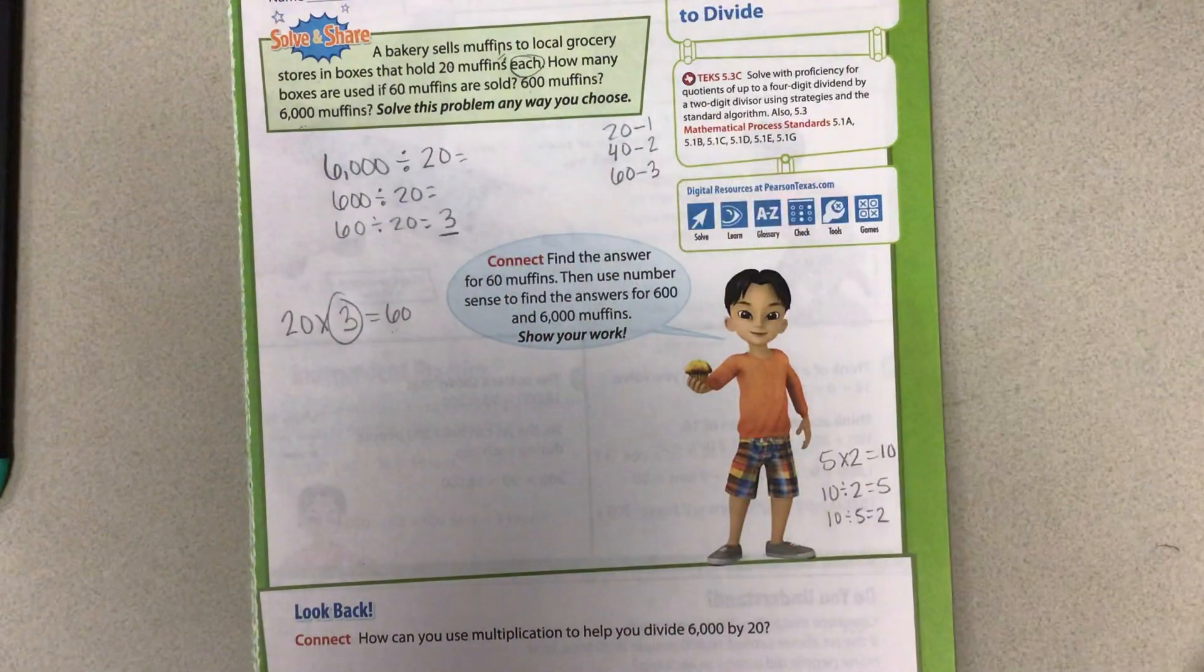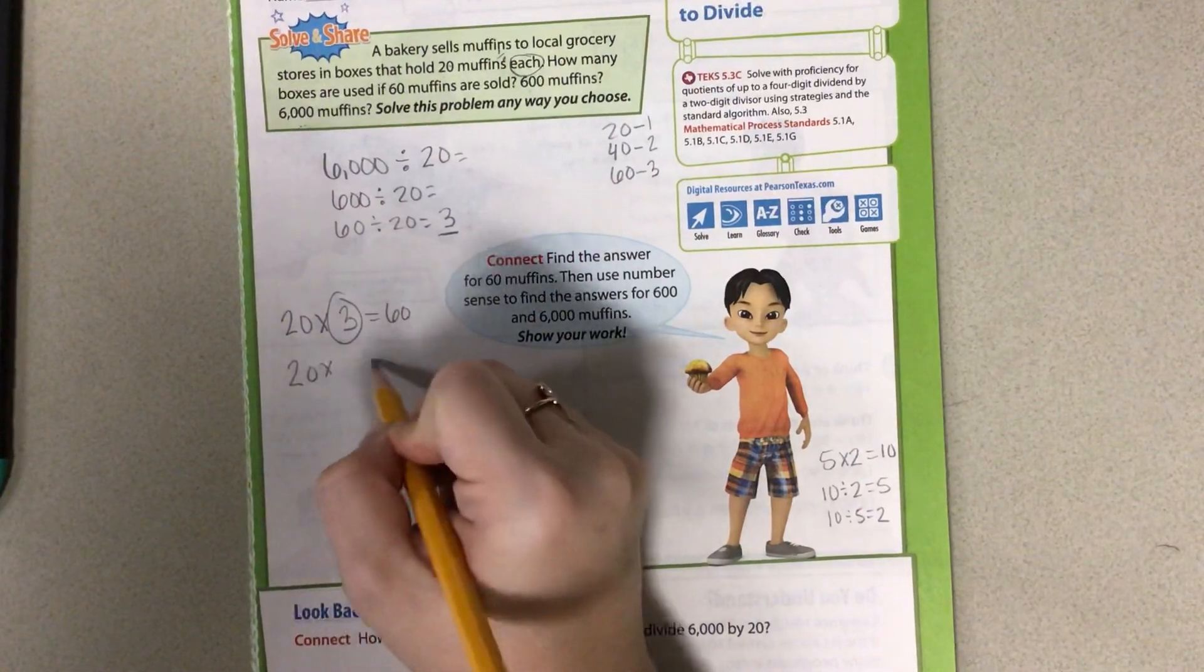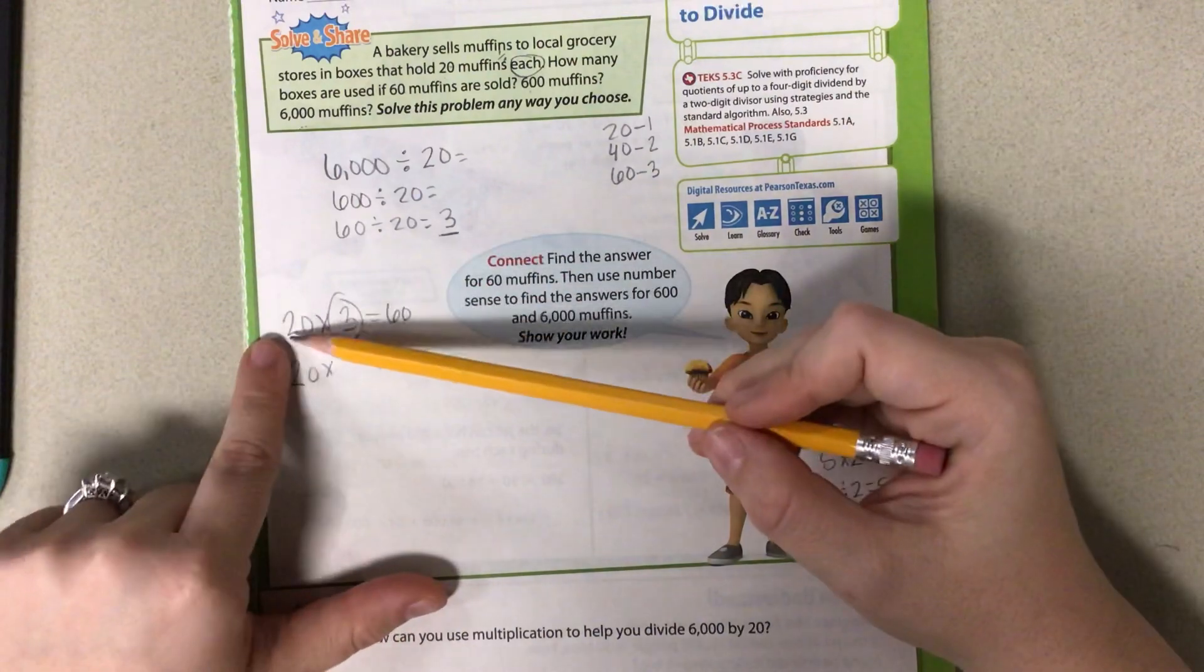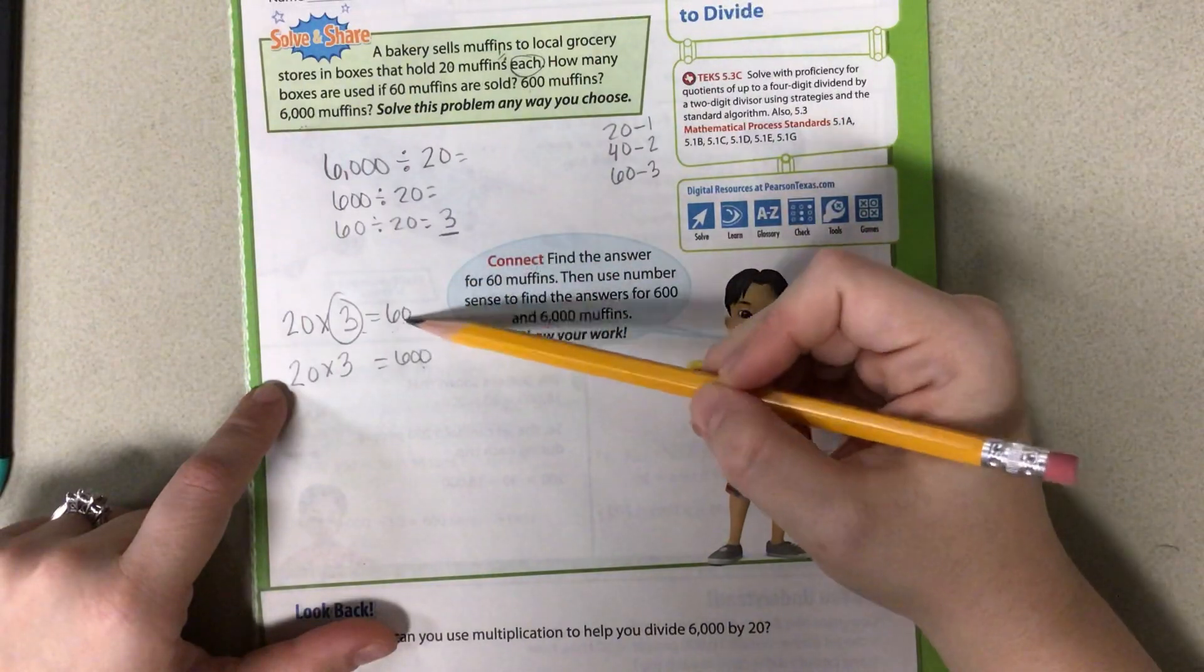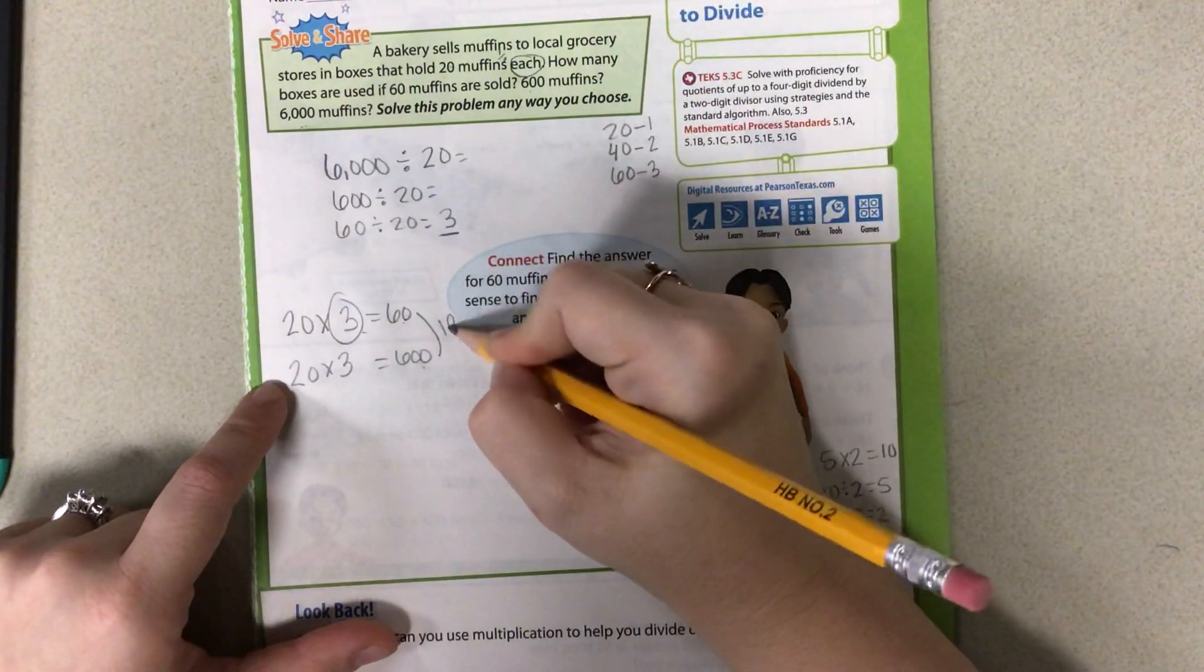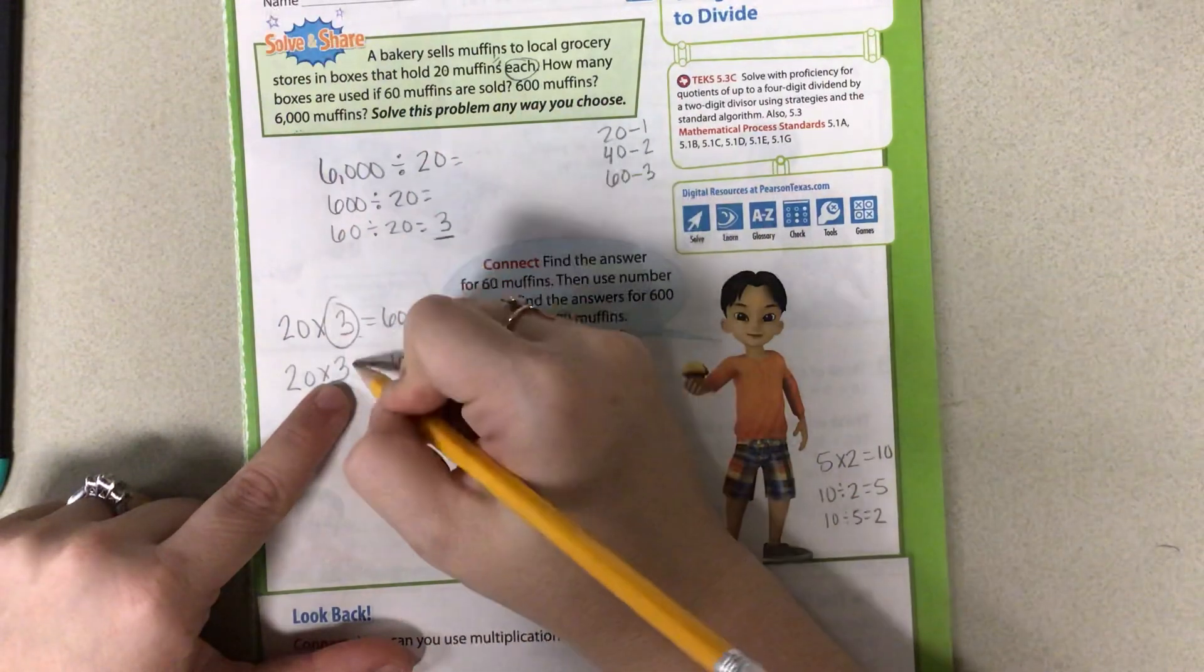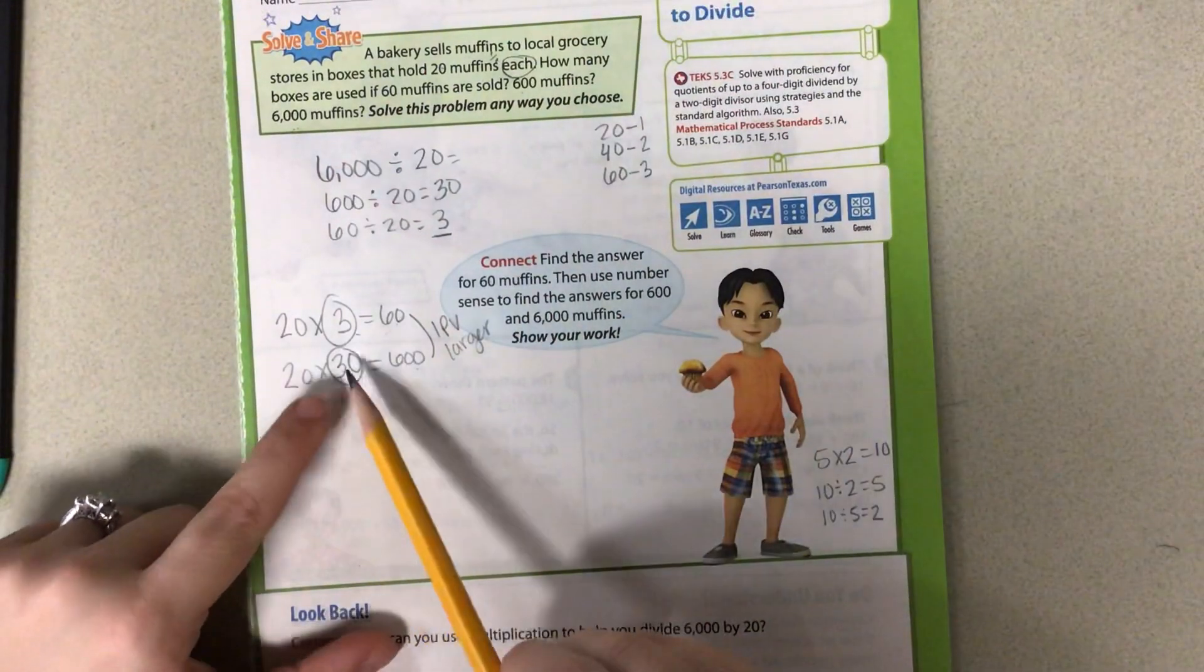Then we can look at doing 20 times what gives me 600. If times 3 gives me 60 and I'm wanting to go to 600, I know that I'm still going to be doing 2 times 3. So I know my 3 needs to be in there. How much larger is it from 60 to 600? How many place values? This is one place value larger. So I want this to be one place value larger. If I'm in the ones place now, I'm going to put a 0 behind it so that I end up in the tens place. And that gives me 20 times 30 equals 600.